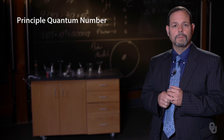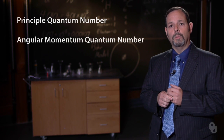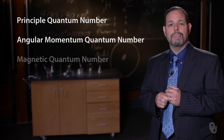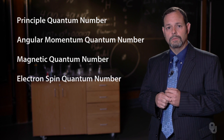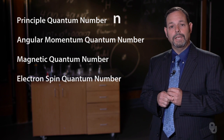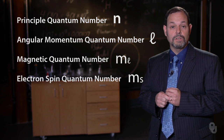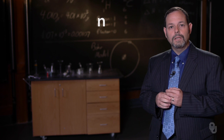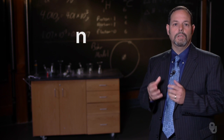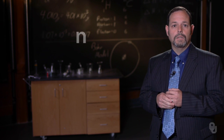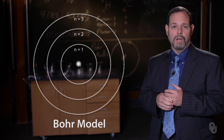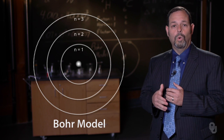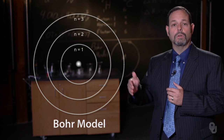The four quantum numbers are: the principal quantum number, the angular momentum quantum number, the magnetic quantum number, and the electron spin quantum number. These are given by N, L, M sub L, and M sub S. N is our basic energy levels — we can think about it as size, and they correlate very well to the Bohr model. They are integers: one, two, three, four, and so forth.